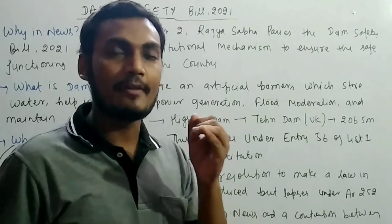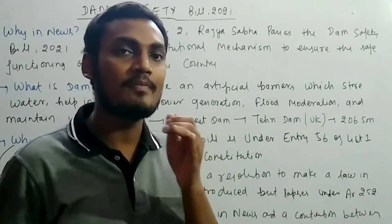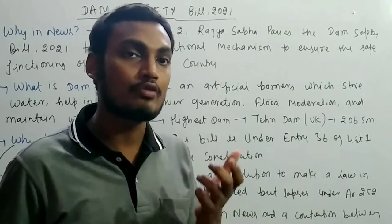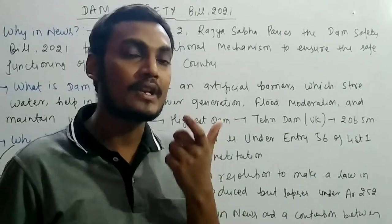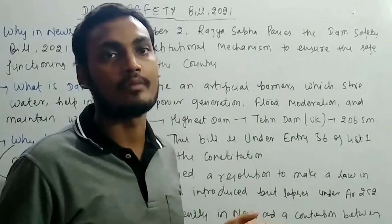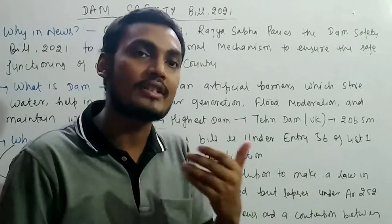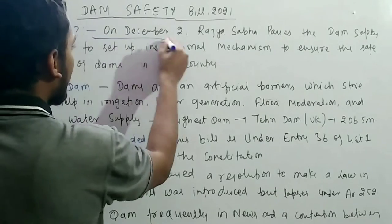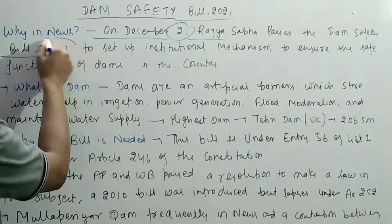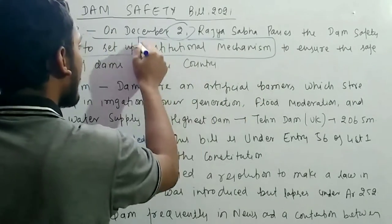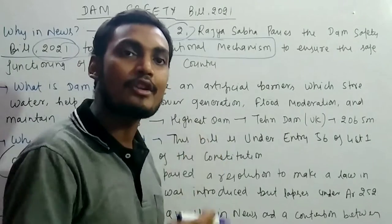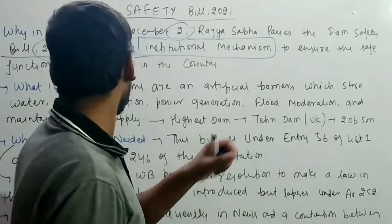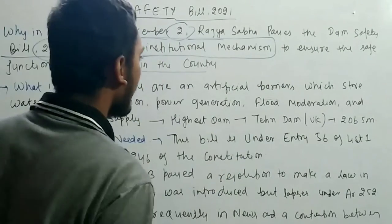Today we will talk about the Dam Safety Bill 2021, which was recently passed by the Rajya Sabha. In this video we will cover why the Dam Safety Bill is in news, what a dam is, why the bill is needed, its basic features, and the main points of contention or flaws related to the bill. The bill was passed on December 2nd to set up an institutional mechanism — a framework — to reduce dam-related disasters and ensure the safe functioning of dams across the country.